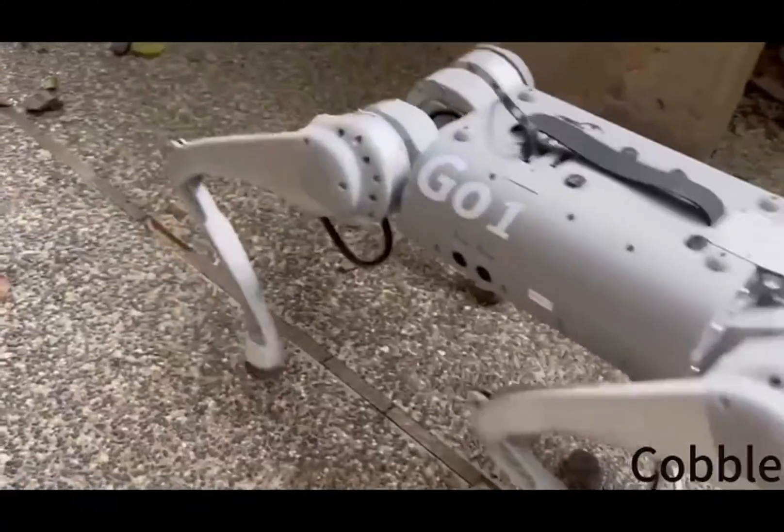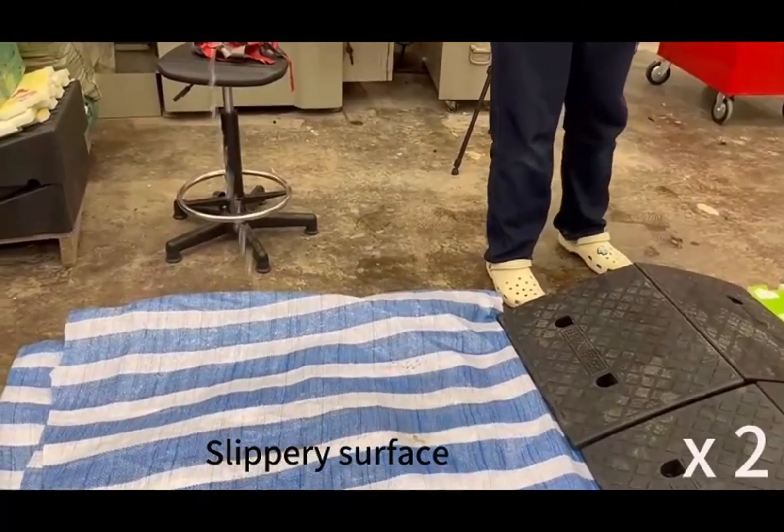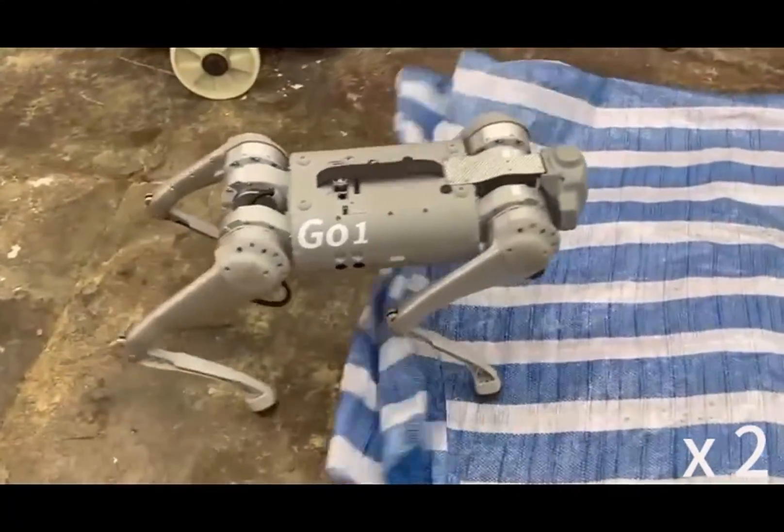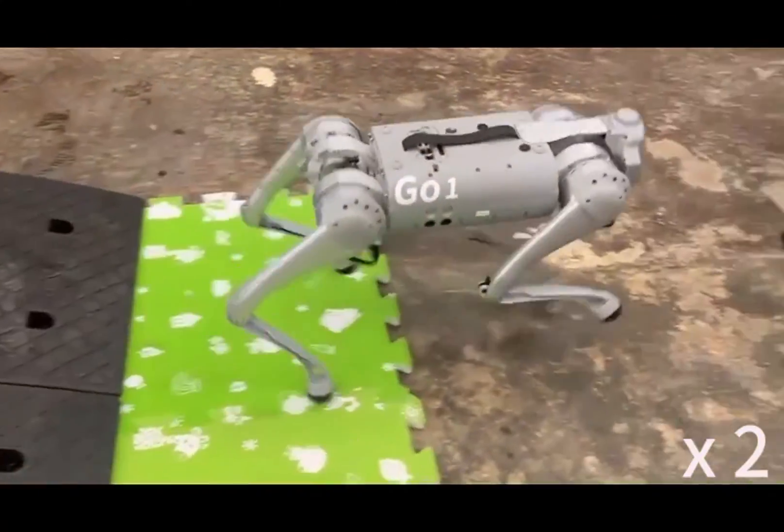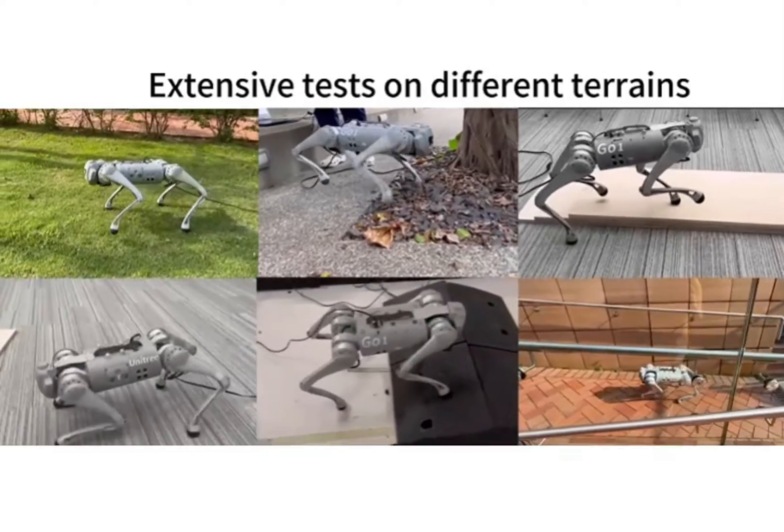In general, FtNet is one of the first controllers that empowers the quadrupedal robot to handle a very wide range of motor failures. It can be directly deployed on the real robot and execute fault-tolerant locomotion without further fine-tuning.